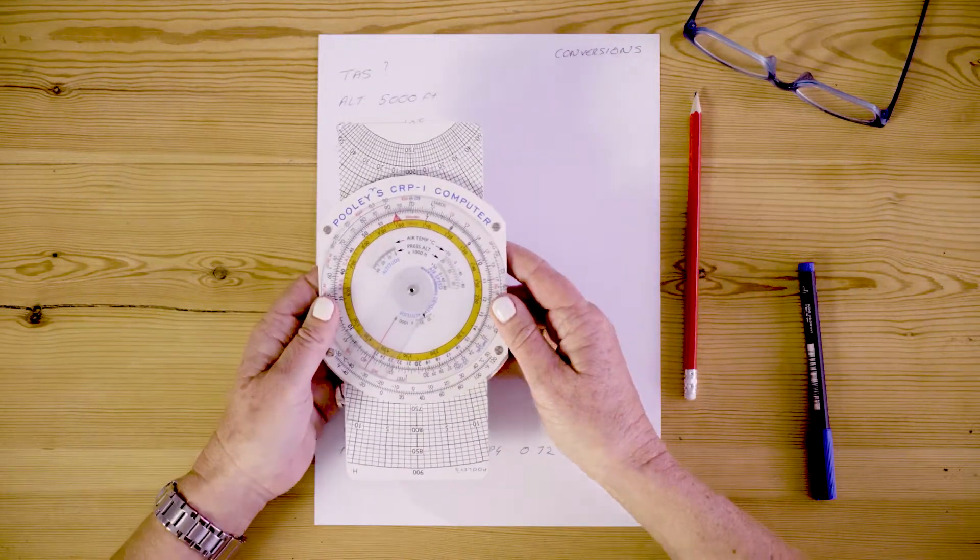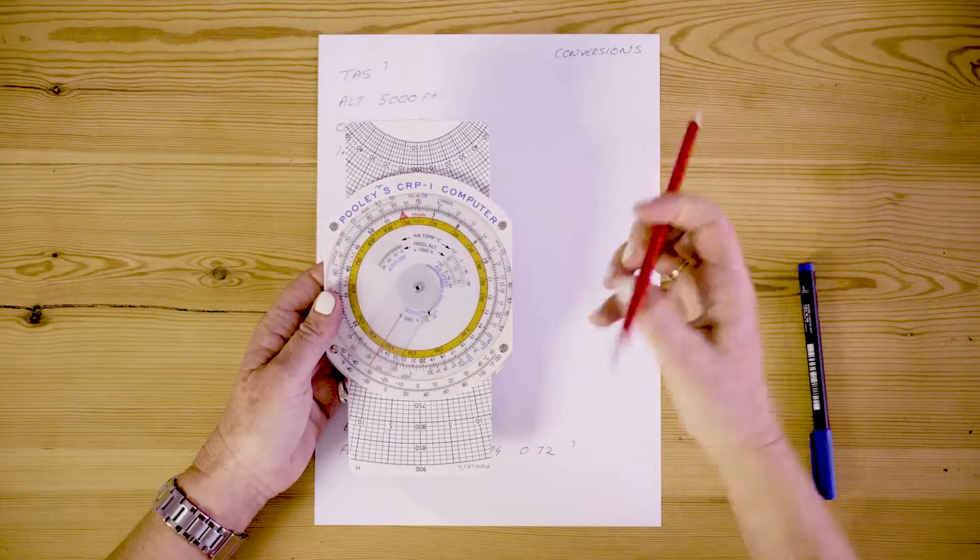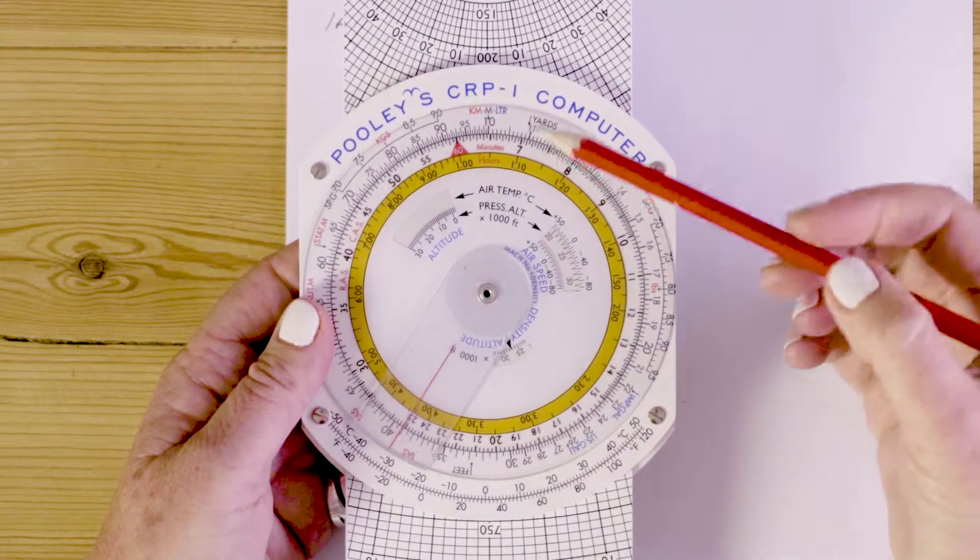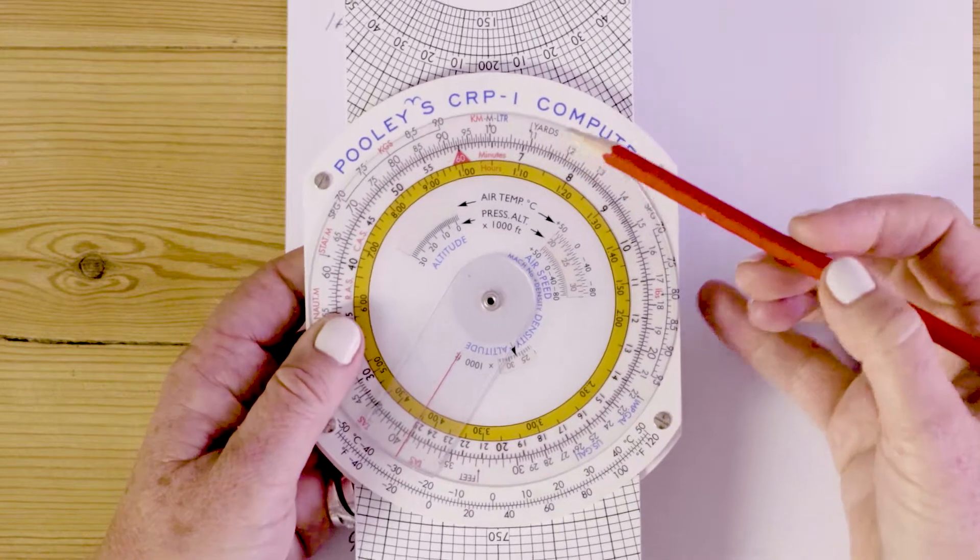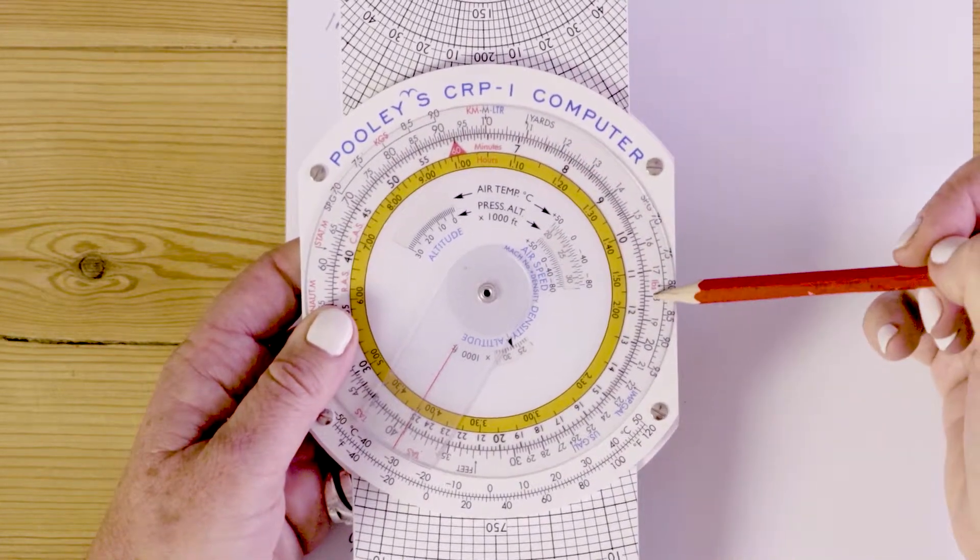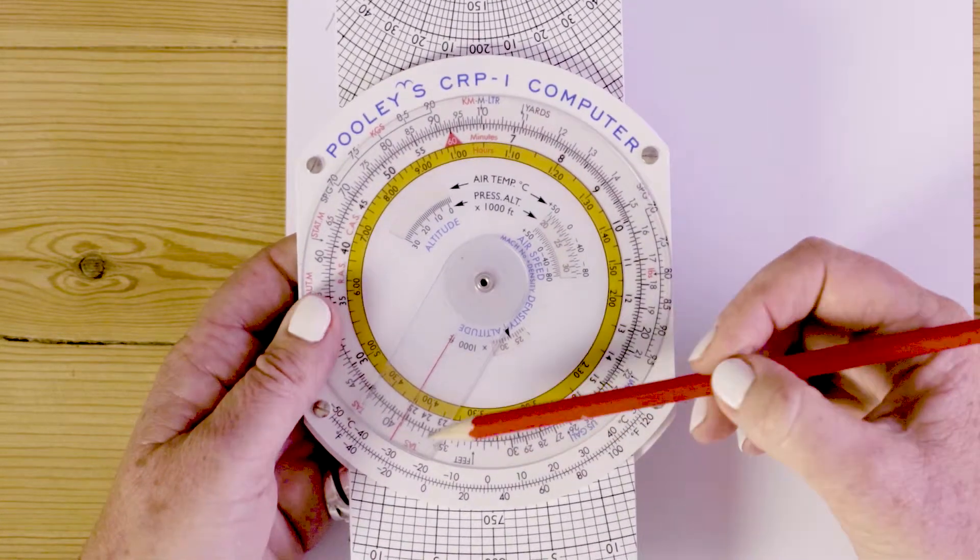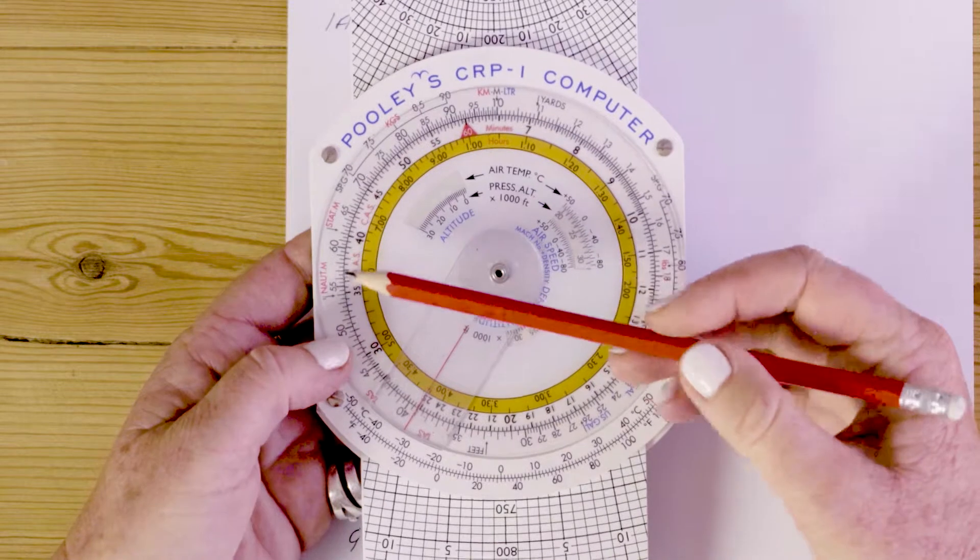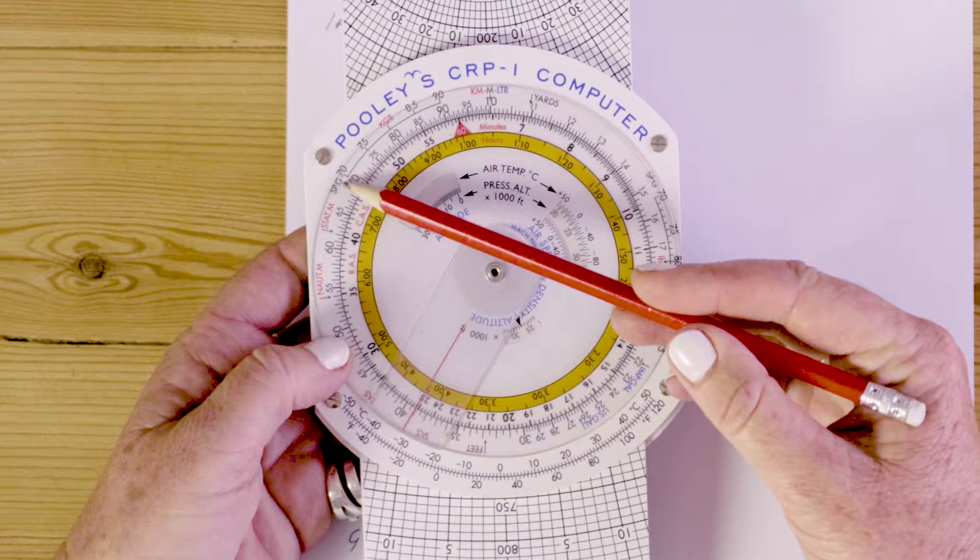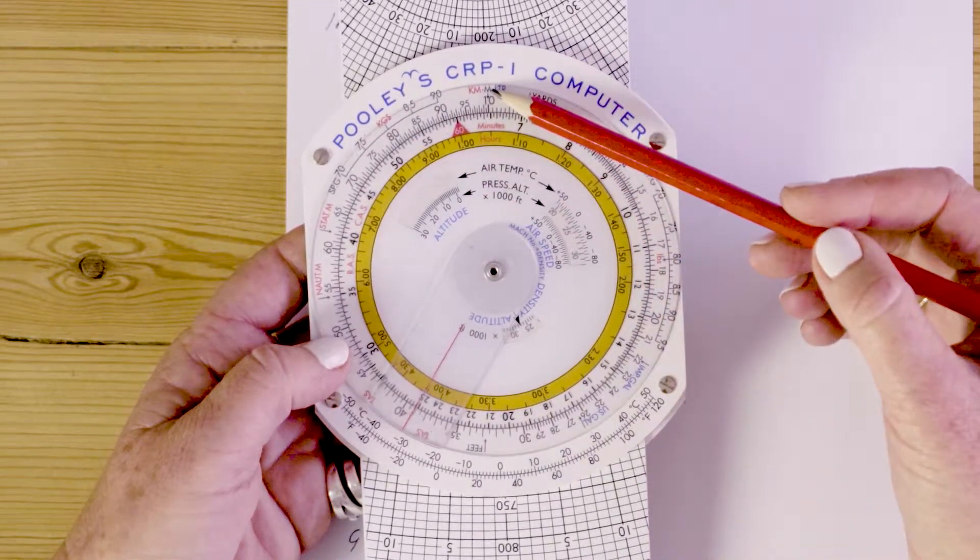Welcome to this part of your computer. It's a little daunting at first but you will notice that around the outside here we have writing. We have kilometres, metres and litres, we have yards, we have specific gravity and pounds, imperial gallons, US gallons, we have feet, we have true airspeed, we have nautical miles, statute miles, another specific gravity but this one's in kilograms which brings us all the way back to the top here.